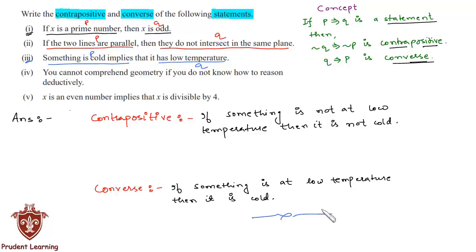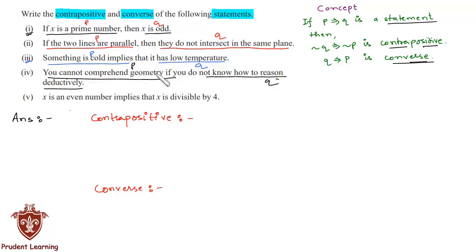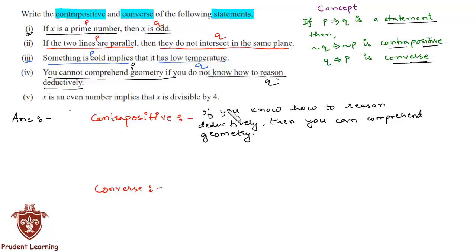The fourth statement is: you cannot comprehend geometry if you do not know how to reason deductively. We call the first part p and the second part q. The contrapositive is: if you know how to reason deductively, then you can comprehend geometry.